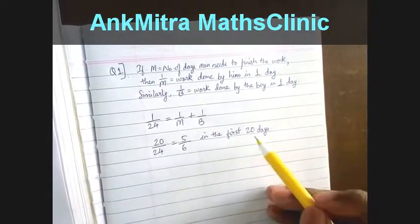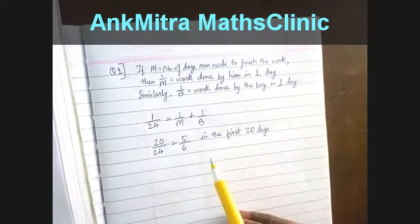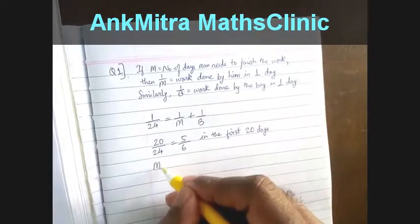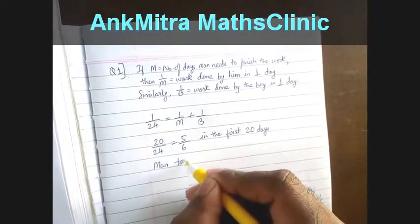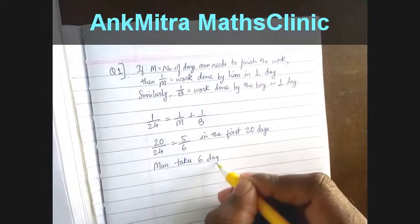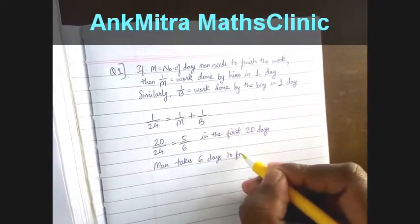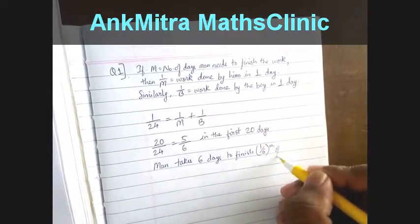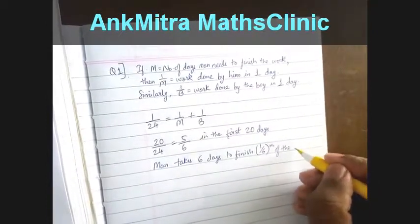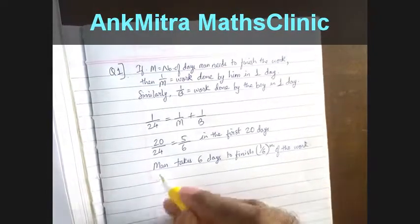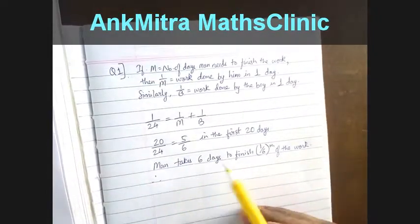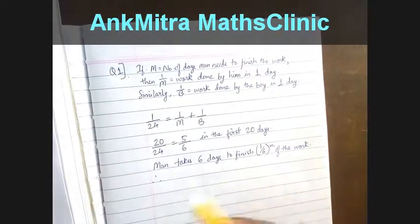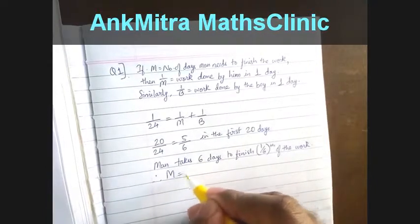That means in the last 6 days when the man is working alone he is completing the remaining 1 by 6th part of the work. So the man takes 6 days to finish 1 by 6th of the work. Therefore, the man will need a total of 36 days to finish the work. So m is equal to 36.